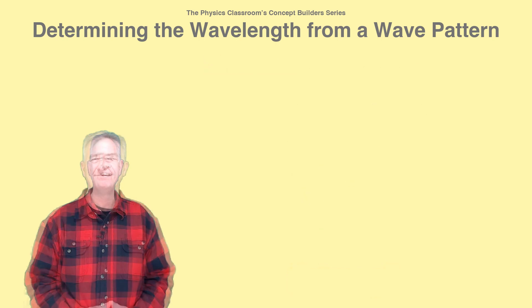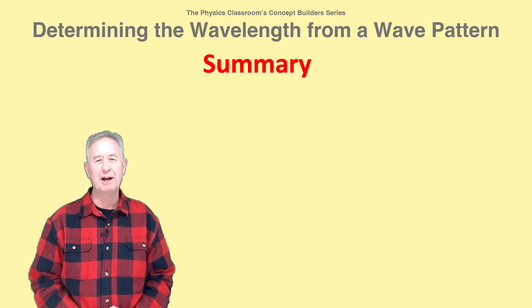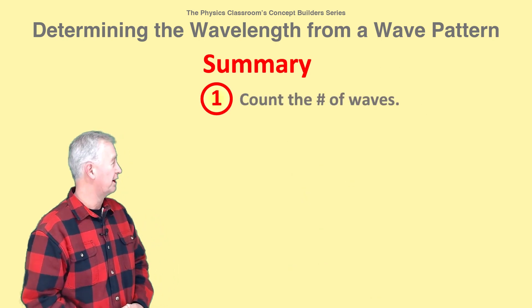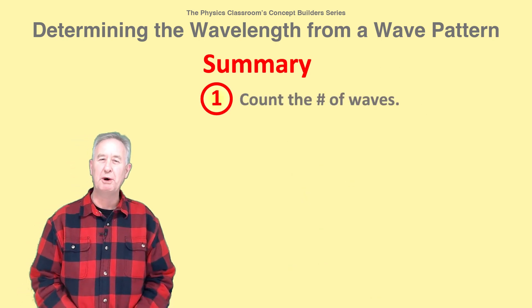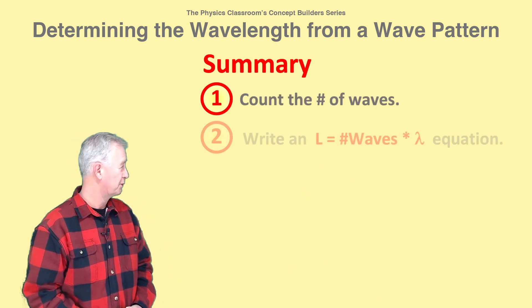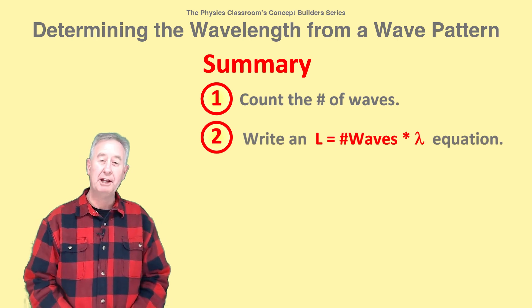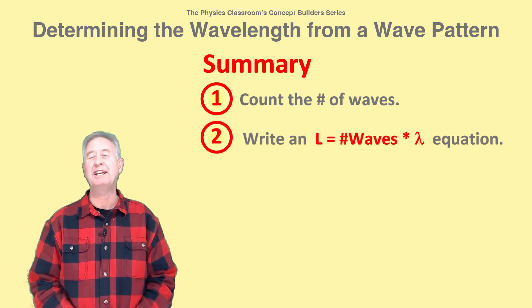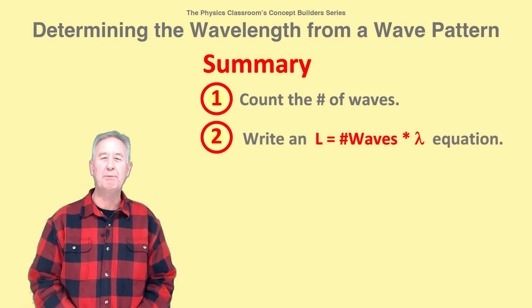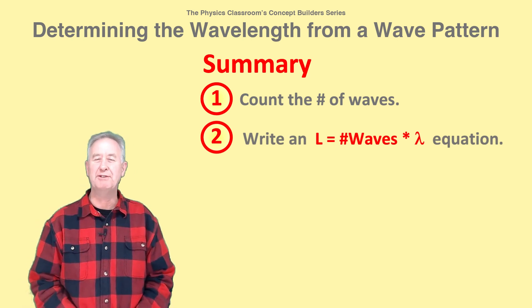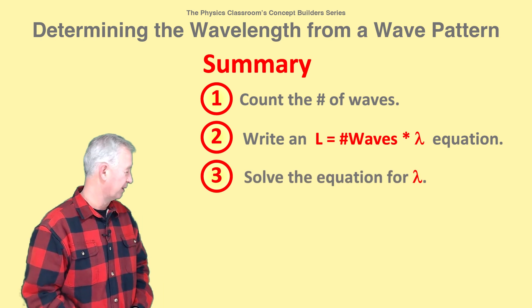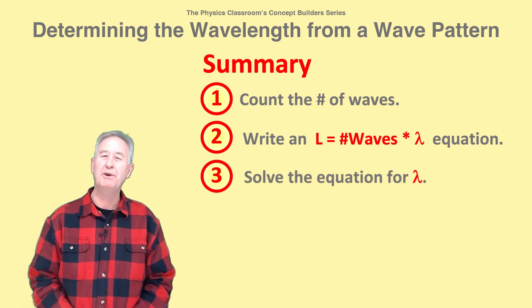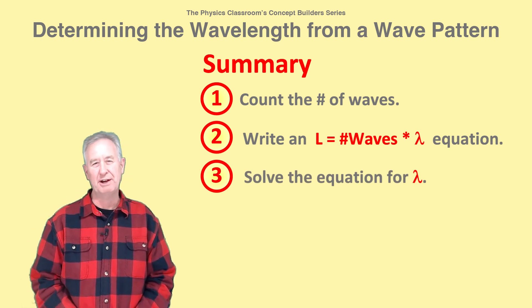You're done. To summarize: step 1, count the number of waves in the rope. Step 2, write an equation relating the length of the rope, the number of waves, and the wavelength. And step 3, solve your equation for wavelength.